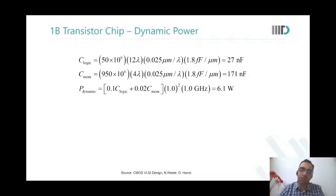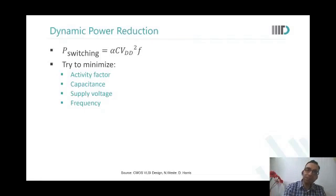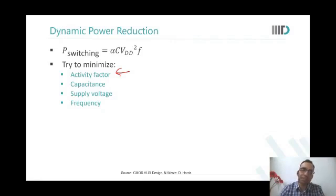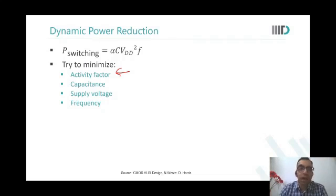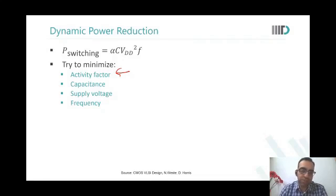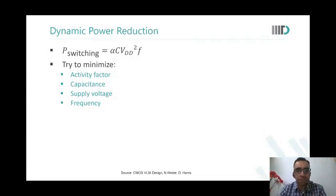You can reduce all three things: you can reduce activity factor — by putting NAND gates in some places and enabling only parts of the circuit. You can reduce capacitances, specifically those that toggle. You can use smaller devices, operate at a lower voltage, or operate at a lower frequency. All these things reduce dynamic power.